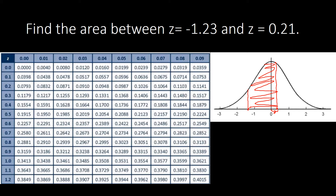To do that, just locate 0.21 on the table. We have 0.2 on the column and 1 on the header. Going down and moving across, this is our area — 0.0832. That is the area from 0 until this certain value of z. Your area must be connected to 0 so that you can use the z-table.